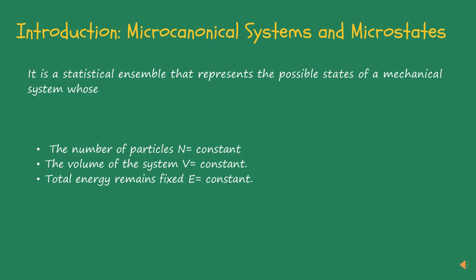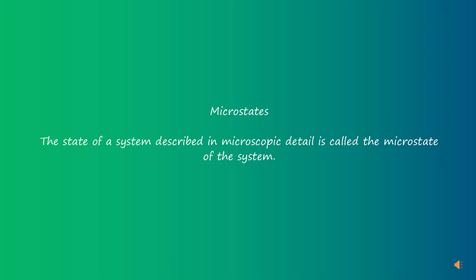Microcanonical Ensemble talks about the possible mechanical systems. It is a NVE system where each of these remains fixed. N is the total number of particles, V is the volume of that system and E is the total energy of the system. When you have many particles, they prefer to stay in the system in a particular arrangement. This arrangement described by microscopic detail is known as the microstates of the system.